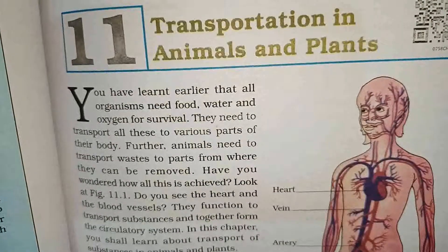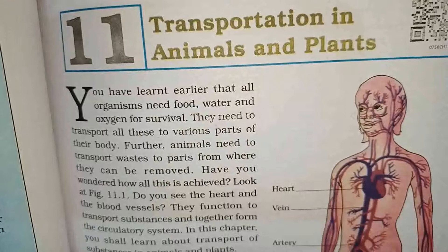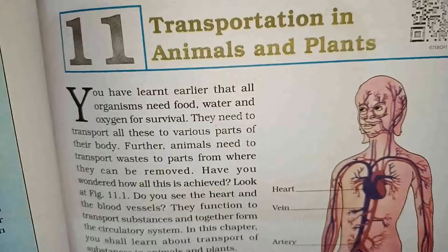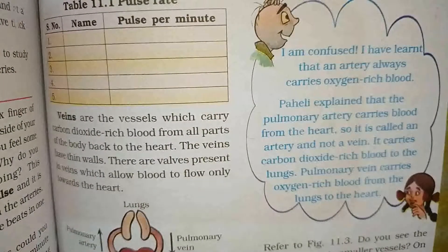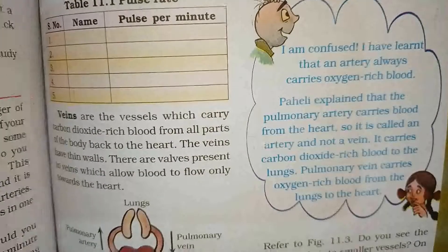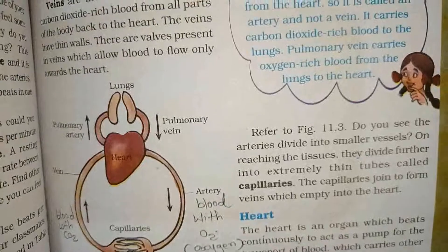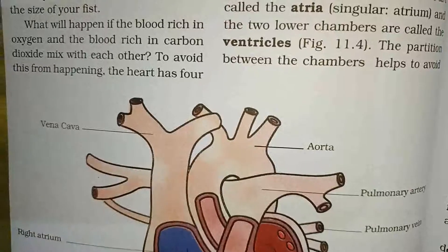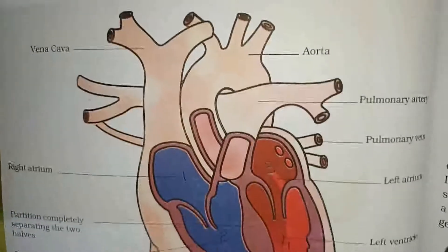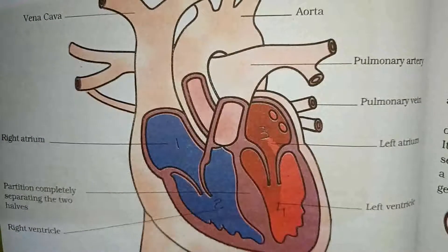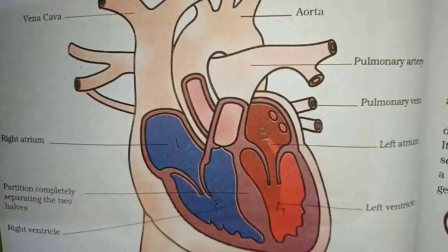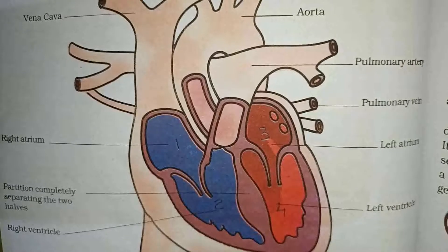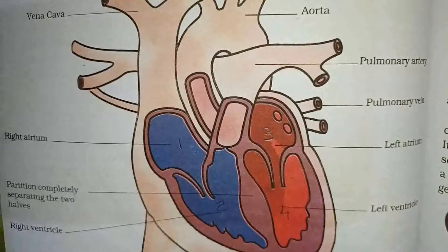Friends, in this unit we are discussing the circulatory system, blood and blood vessels, and the heart. In the last lecture, we discussed the shape of the heart, function of the heart, and structure of the heart. So today we are moving to the next topic.